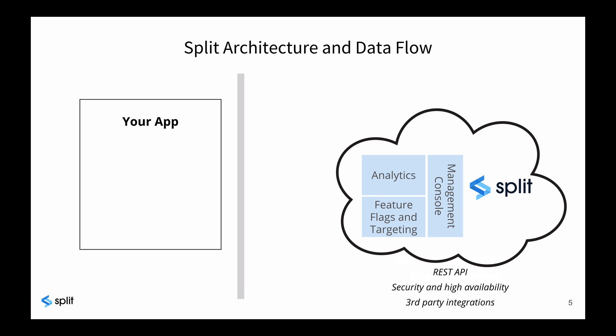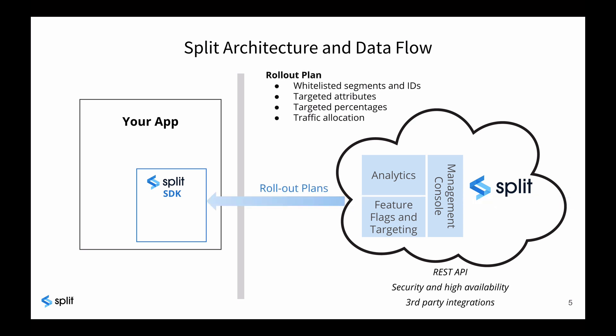Let's take a look at the data flow in a little more detail. Split provides implementation options to meet your requirements. By far the most common is to install the Split SDK in your application, whether using JavaScript, iOS, or Android on the front-end, or any of the most common back-end platforms. When Splits are created, the rollout plans are sent to the SDK, where they are cached and automatically kept up to date as changes are made.